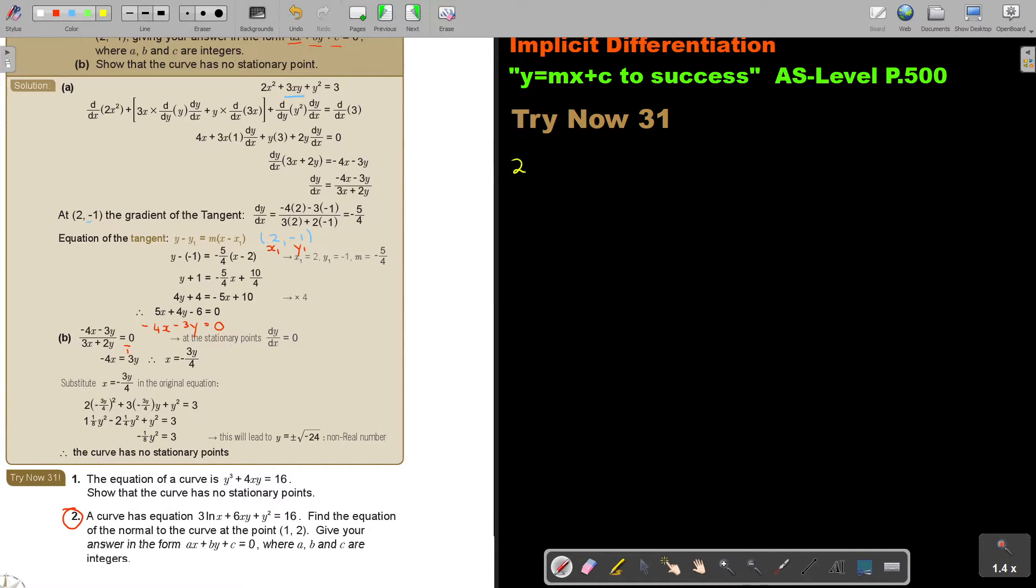Number 2. A curve has equation plus... Find the equation of the normal to the curve at the point (1, 2). Keep this in mind.